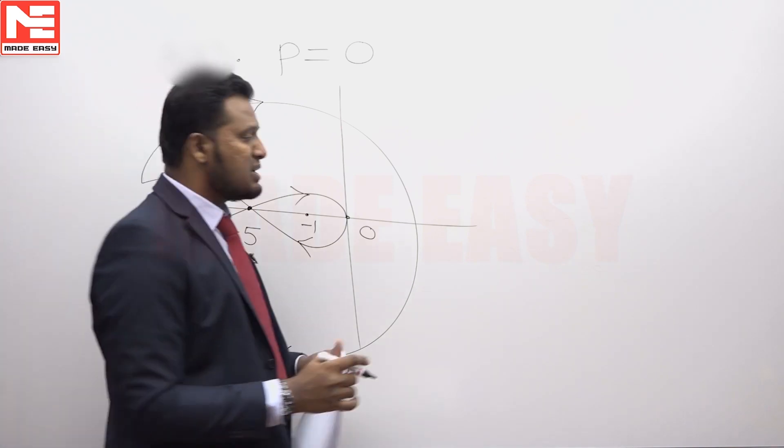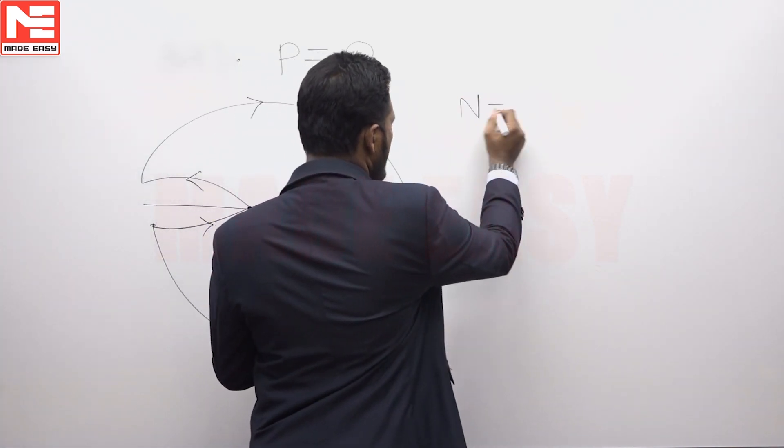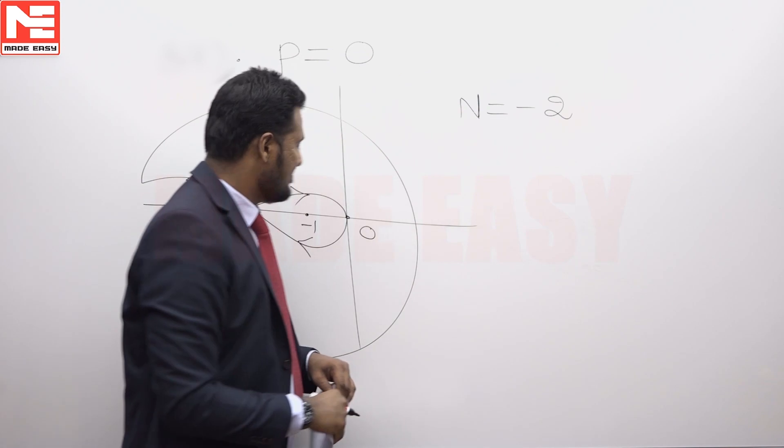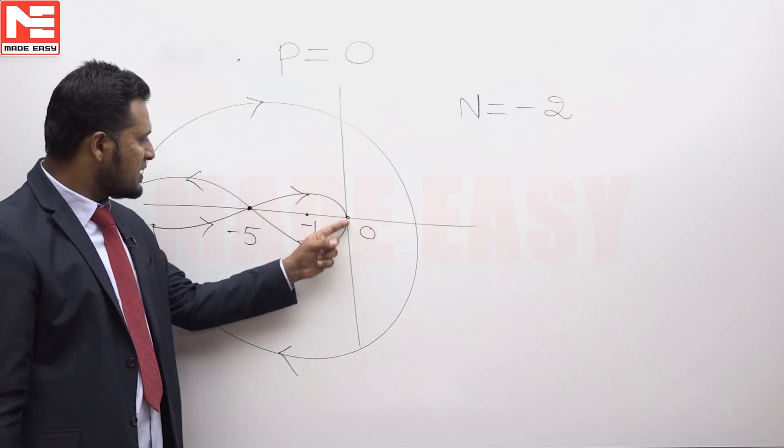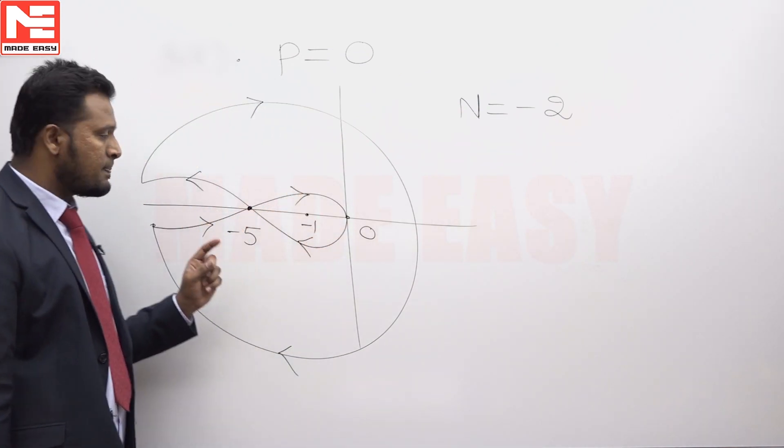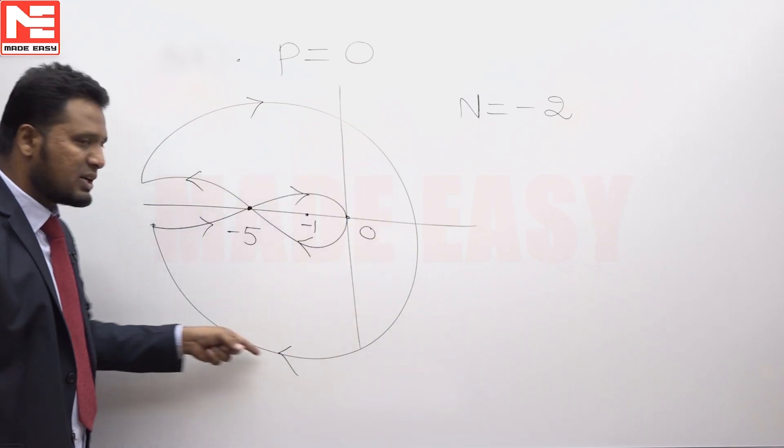Hence minus 1 comma 0 is encircled two times in clockwise direction. This is one encirclement in clockwise direction. This is another encirclement in clockwise direction.